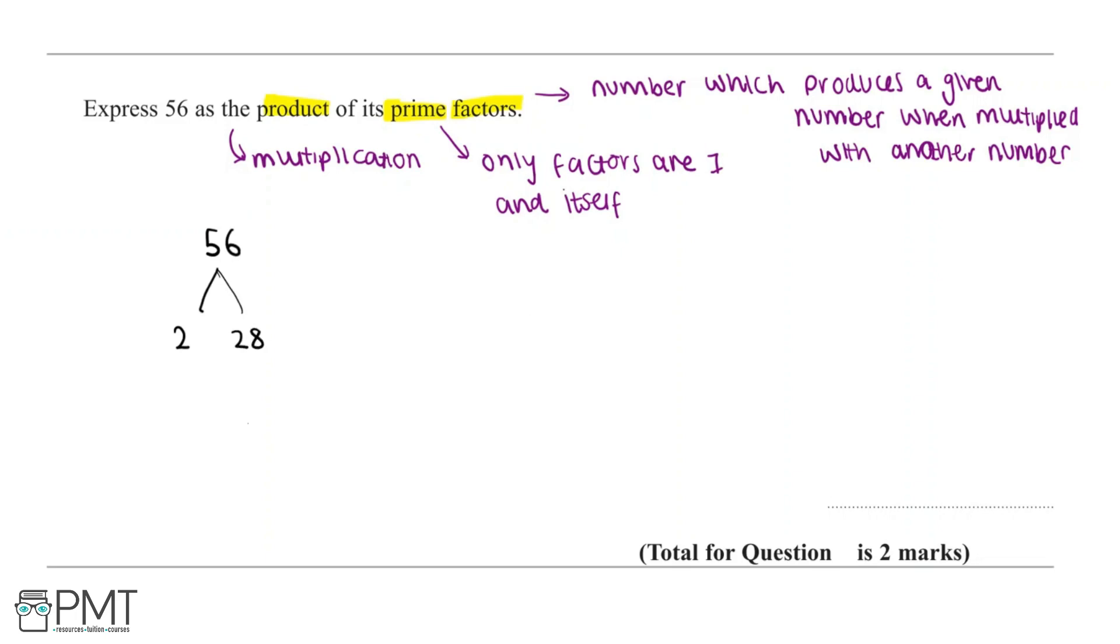Now, in a factor tree, we're trying to break a number down into a product of its prime factors. So as soon as we see a prime number, we know that that number cannot be broken down any further.